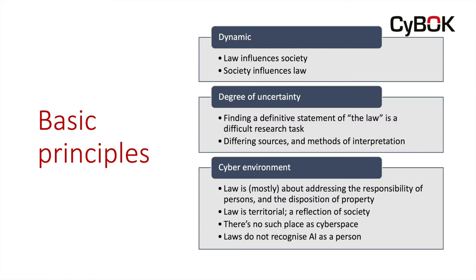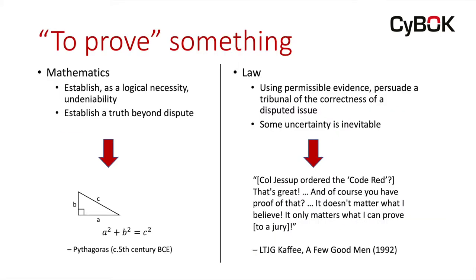Working with cybersecurity experts over the years, I've realized there is some confusion when a lawyer talks about trying to prove something. In a discussion with one of my favorite mathematicians, what came out was this: in mathematics, to prove something means to establish as a logical necessity that something is undeniable — to establish a truth beyond dispute. So here we have the Pythagorean theorem, for example. There are a number of well-known mathematical proofs of that theorem — you can prove it to a logical certainty, absolutely beyond dispute.